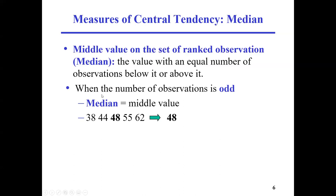For example, if we have five observations ranked ascending from 38 to 62: 38, 44, 48, 55, 62 — we have an odd number of observations, so it's easy to find the middle value, which is 48. Here, 48 is not something you calculated; it is the value of an actual observation in your ranking.